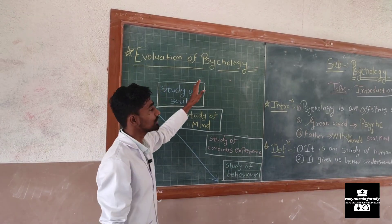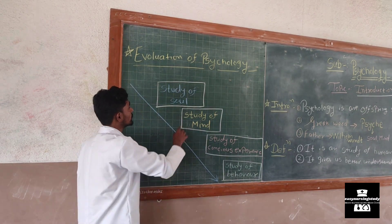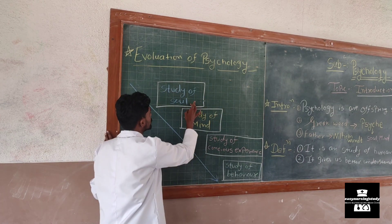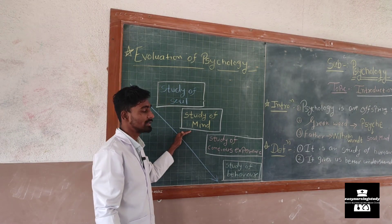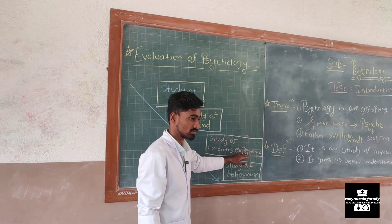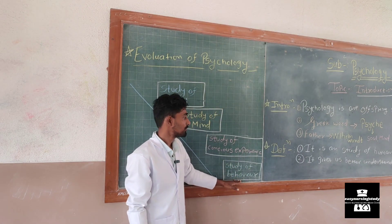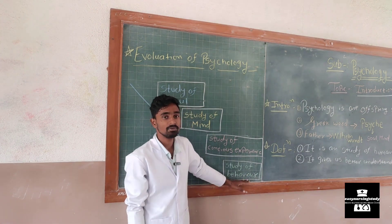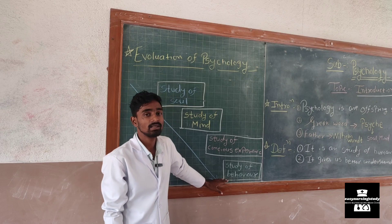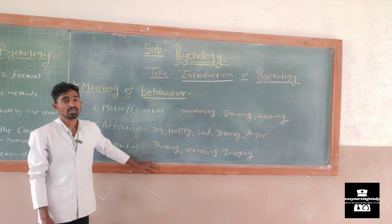Next we will look at the evolution of psychology. Various scientists gave their opinion about psychology and its meaning. In the first century, psychology was the study of soul — soul means spirit. Then other scientists defined it as the study of mind, then the study of conscious experiences, and the leading result is the study of behavior. Finally, psychology means the study of behavior of an individual, as various people and cultures have different behaviors.